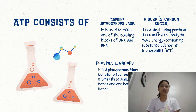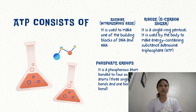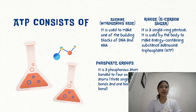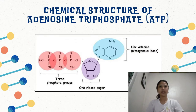The last component is the phosphate groups. Coming from the word itself, tri, which means three, it consists of three phosphate groups. It is a phosphorus atom bonded to four oxygen atoms, with three single bonds and one double bond.